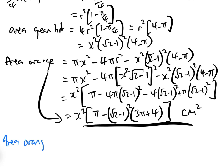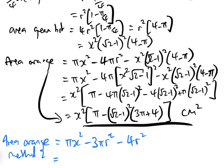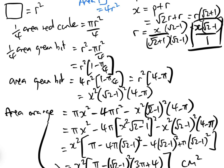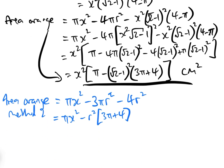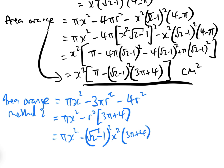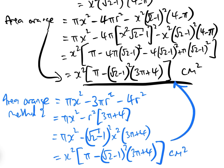So for Method 2, the area of the orange bit equals the area of the blue circle, take away 3 times pi times r squared, take away 4r squared — the area of the blue square. That equals pi x squared minus r squared(3pi + 4). Replacing r with x(root 2 − 1), that equals pi x squared minus (root 2 − 1) squared times x squared times (3pi + 4), which equals x squared times [pi minus (root 2 − 1) squared(3pi + 4)] centimetres squared — clearly the same answer as Method 1.